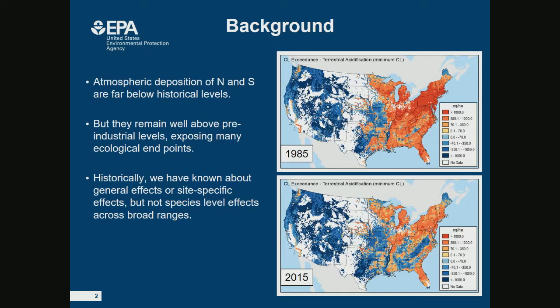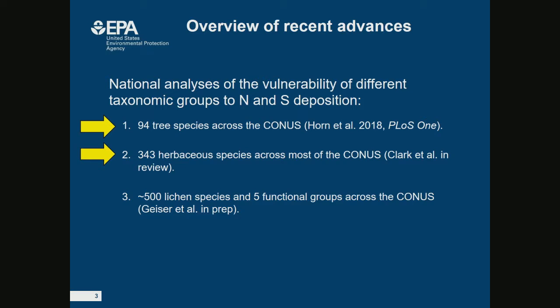This map shows exceedances of the critical load for terrestrial acidification around the peak in 1985 and more currently in 2015 — you can see a lot less red, a lot less deep red, but there's still quite a bit of area exposed to atmospheric deposition that's too high. I'm going to give an overview of two out of three major updates: a national analysis of 94 tree species across the continental U.S., vulnerability to nitrogen and sulfur deposition, published a few months ago, and then 343 herbaceous species vulnerability to nitrogen and sulfur deposition.